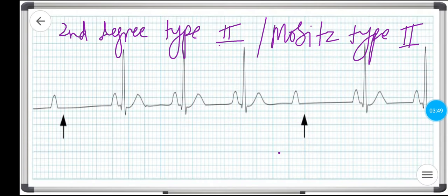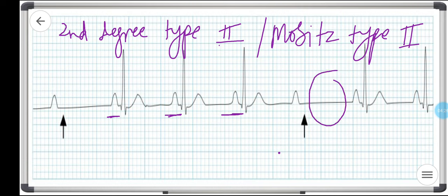Next is the second degree type 2, also called Mobitz type 2. In Mobitz type 2, there is a sudden drop in the QRS complex. The PR interval is normal throughout — there is no progressive prolongation of the PR interval as seen in Mobitz type 1. Everything looks fine, but suddenly a QRS is not conducted. The P wave is present but the QRS is missing. This is due to a failure at the level of the bundle of His, below the AV node — an intermittent non-conducted P wave without progressive PR elongation.